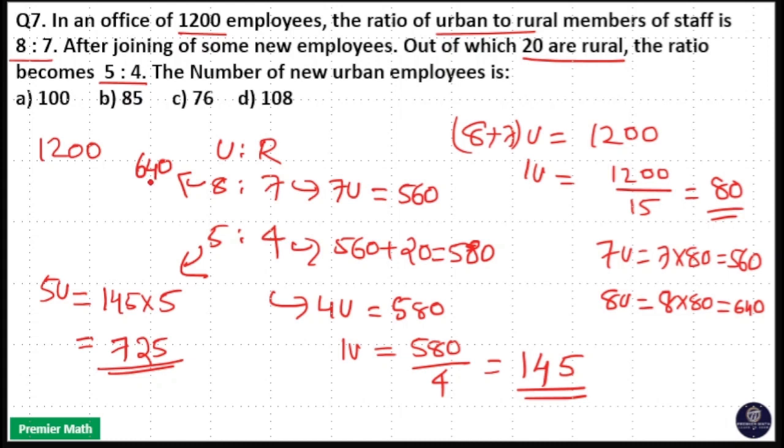Initially there were 640 urban people. Finally there were 725 urban people. So new urbans joined is 725 minus 640, which equals 85. Option B is your answer.